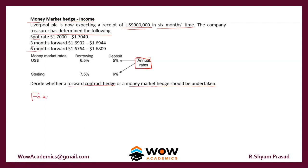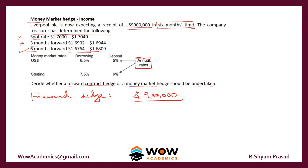First, the forward hedge: since the receipt is in 6 months, use the 6-month forward rate (ignore spot and 3-month rates). As it is income, we receive less local currency, so we pick the higher denominator. Using 1.6809 as the forward rate: $9 lakh divided by 1.6809 gives £5,35,427.45 as the sterling receipt under the forward hedge.